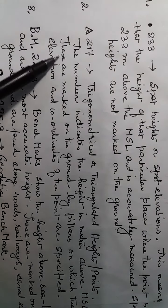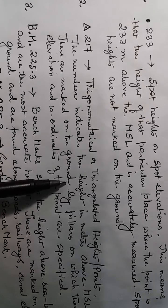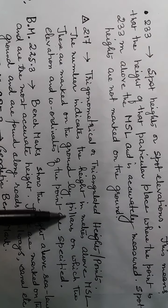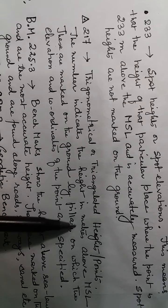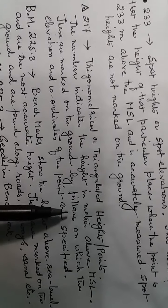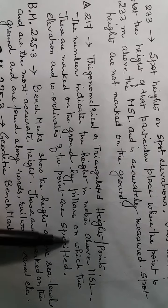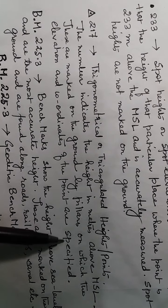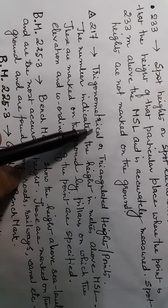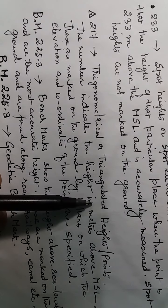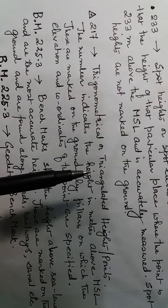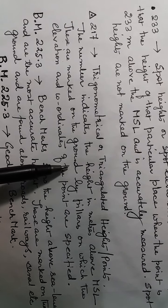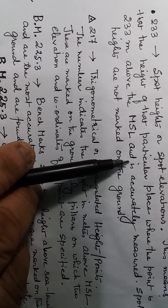Trigonometrical stations are marked on the ground by pillars. Pillars are constructed on the ground, and on these pillars the elevation and the coordinates of the points are specified. So trigonometrical or triangulated stations are marked on the map as well as on the ground, whereas spot heights are only marked on the map.